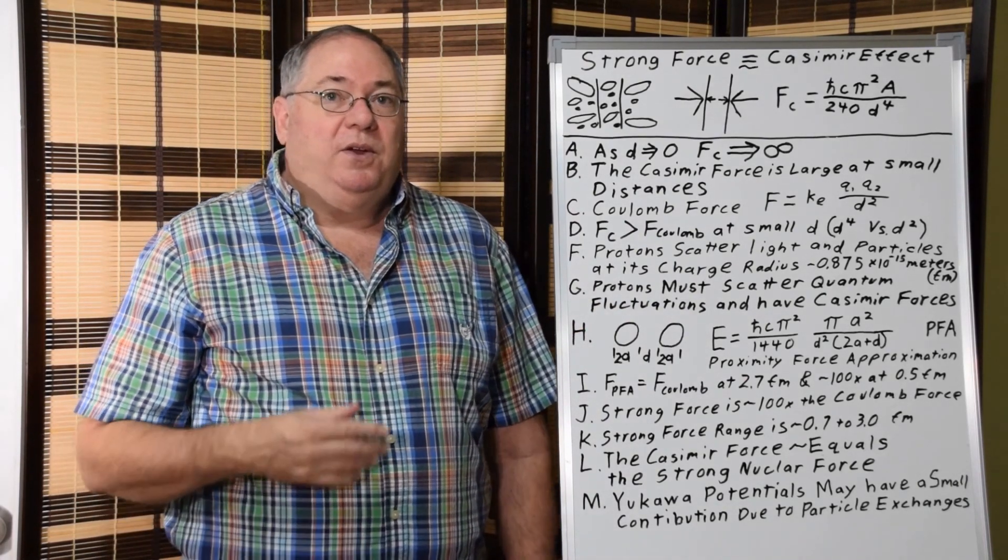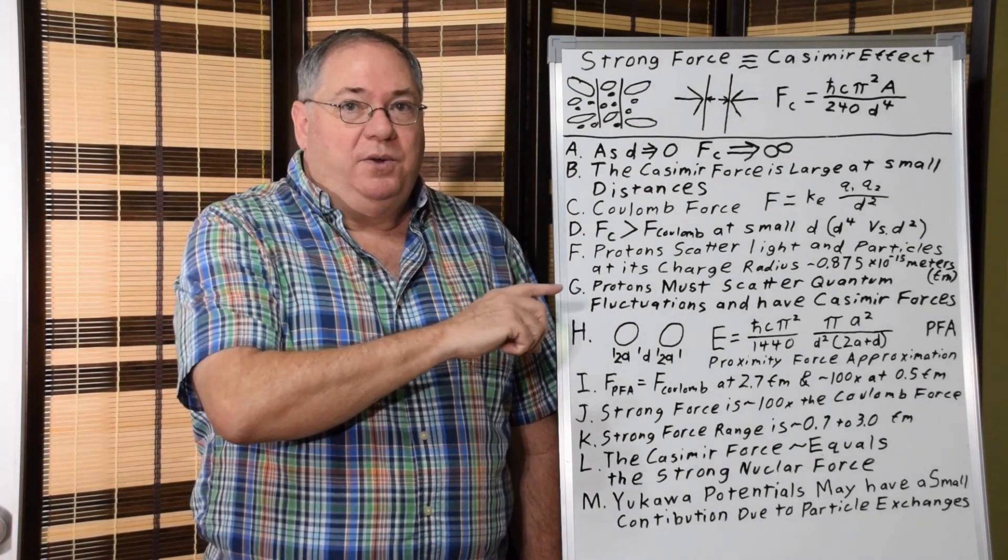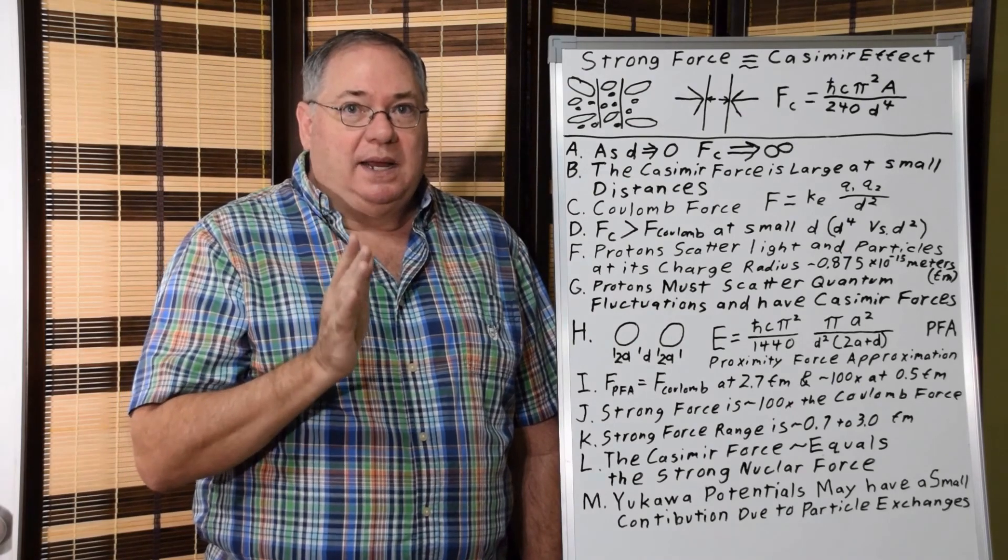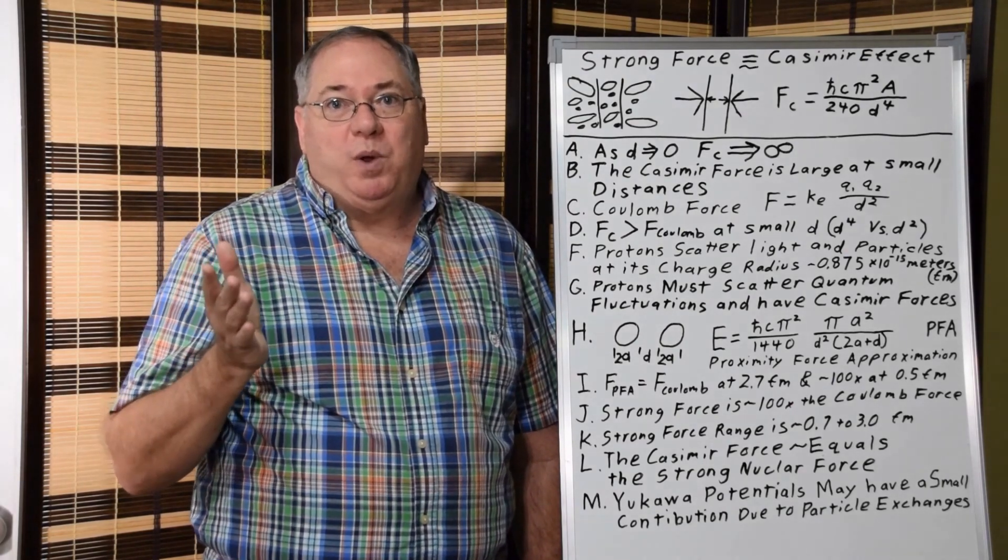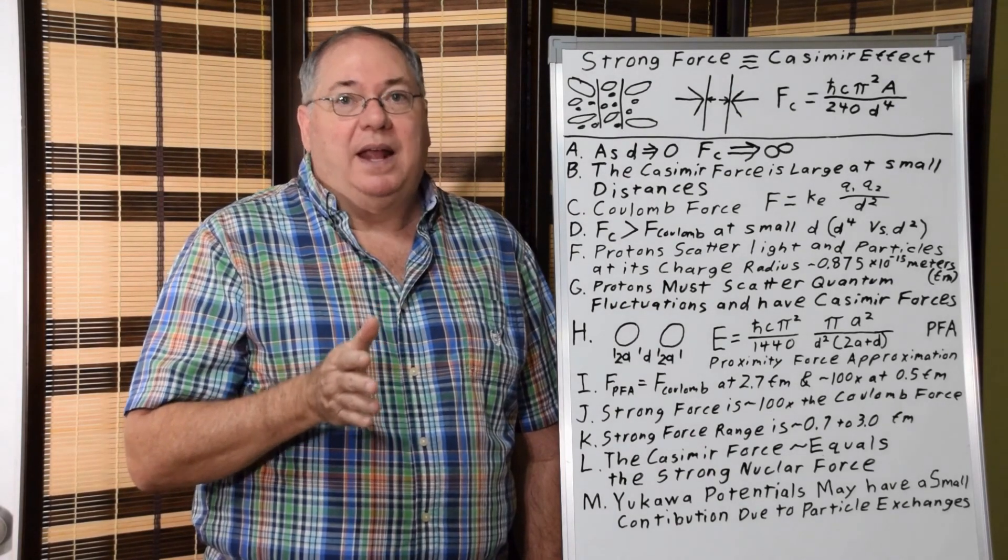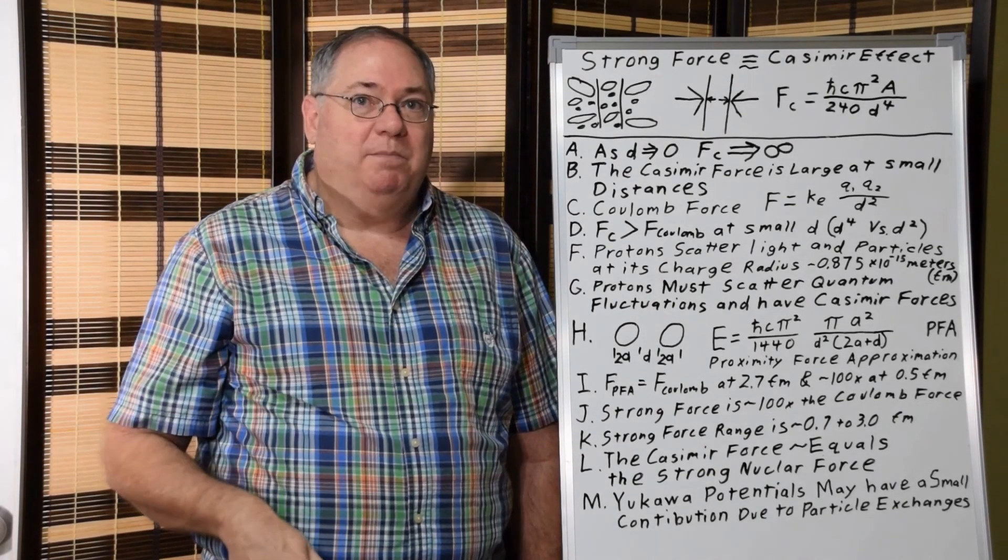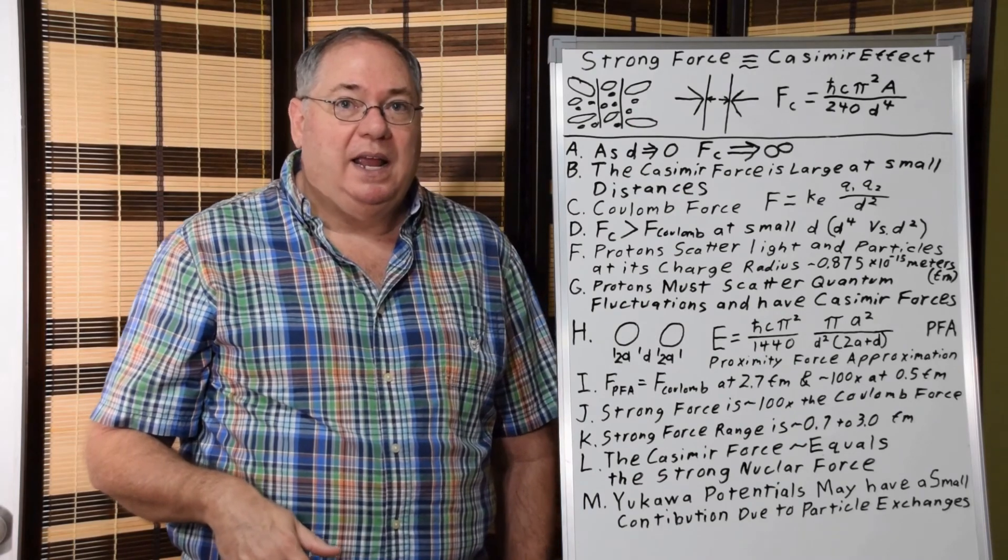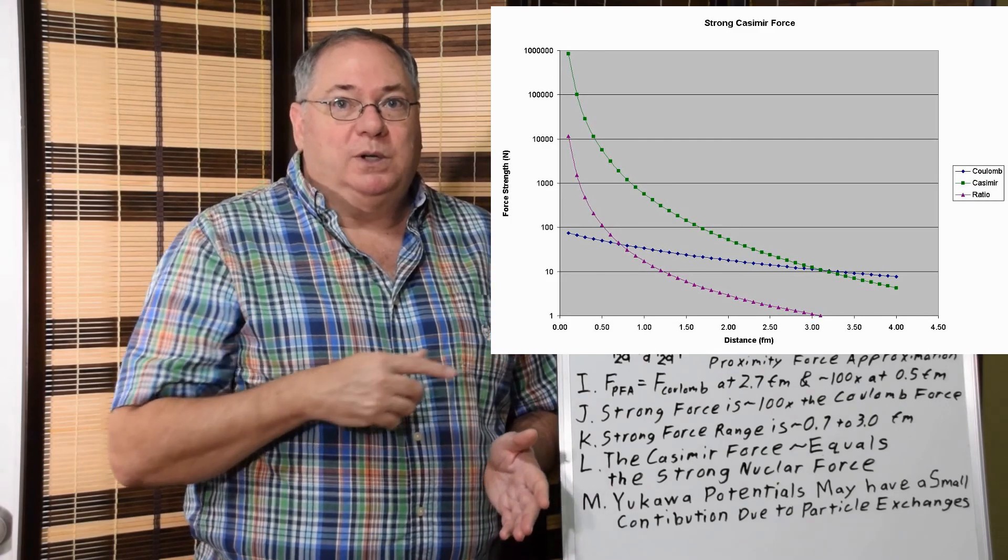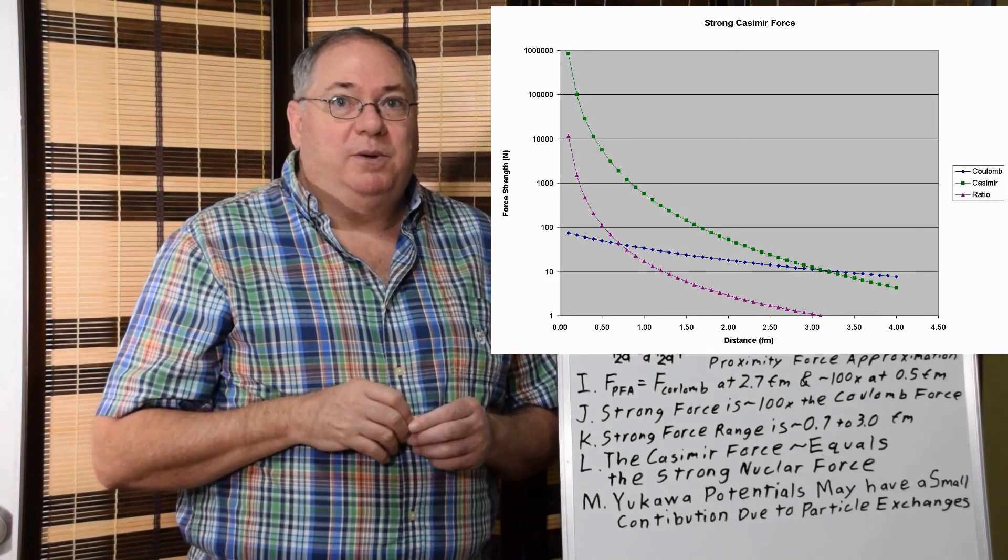And what we can do is rather than try to convert this into force, we can stepwise at increments of say 0.1 femtometer, calculate the energy and then convert it to force in order to compare it to the Coulomb repulsion. And that tells us at what point the Casimir force becomes stronger than the Coulomb repulsion.